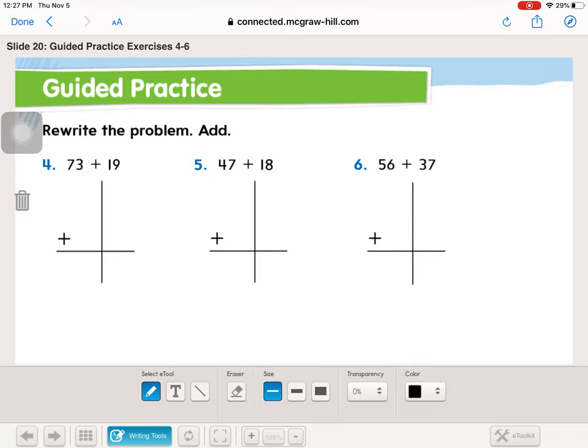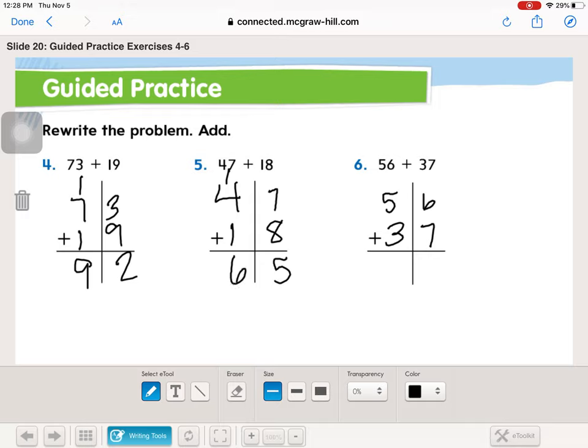So you should have rewritten all of these up and down like this. And then you should have added and gotten 92, 65, and 93. Hopefully you did well.